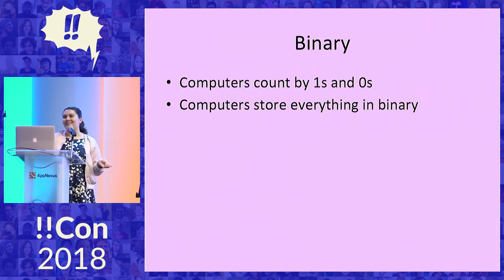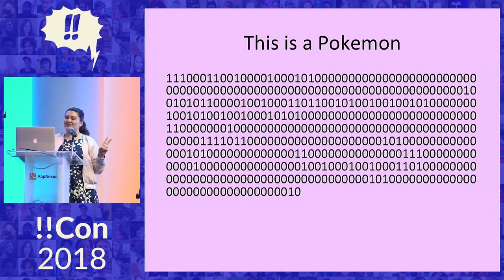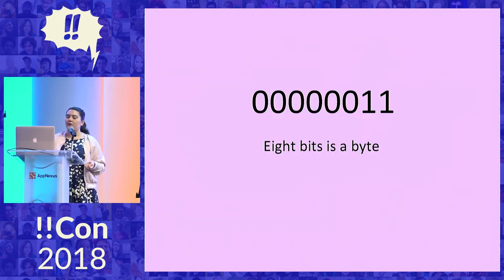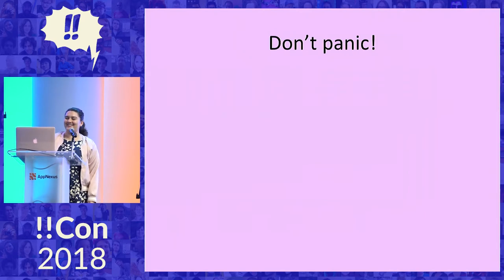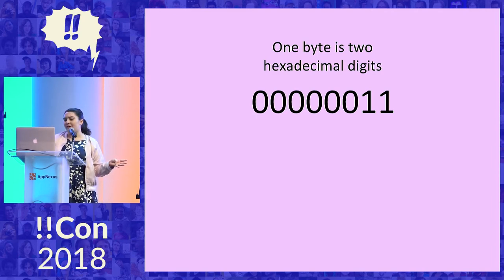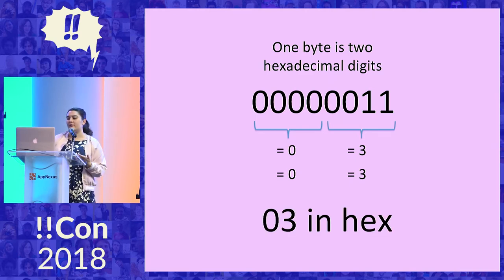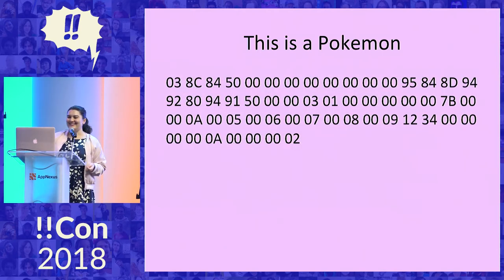Everything on a computer is stored in binary. This is a Pokemon — a second-generation Pokemon — and you can't really read this unless you're fresh out of the Matrix. So let's make this easier to parse. Eight bits, eight binary numbers, make up one byte, and that's usually how computers store information. We can divide this up and it looks nicer — not really, this is not easy to read at all. So we're going to change this into hex, which is hexadecimal, another counting system in base 16. Basically, you take the first four binary bits and the last four and transform them into hex numbers. So this is 03 in hex. We can do that with every single byte, and I've done that for you. So this is a Pokemon now — still not easy to read.